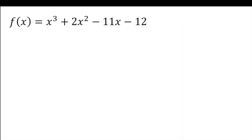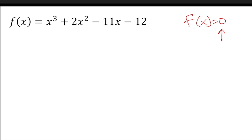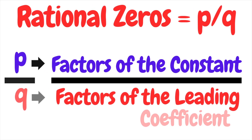Let's start with the first problem. When they're asking for the zeros, the main idea is to find the values of x that will make your function equal to zero — that's the whole goal. Normally with a polynomial, you make it equal to zero and try to factor. If you have four terms, use grouping as factoring — check the video in the description. Our goal for this video, though, is using the Rational Zero Theorem.